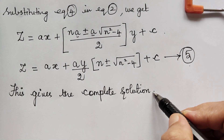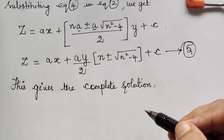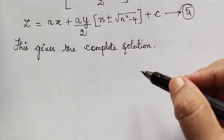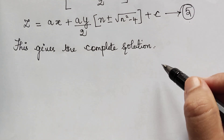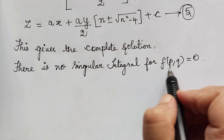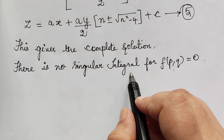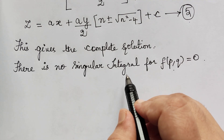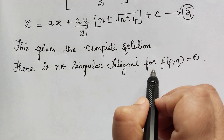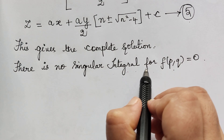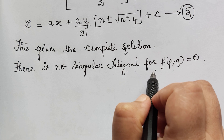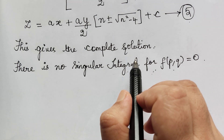After this we have to note that there is no singular integral for f(p, q) = 0, because if we try to find it the result will be absurd. This concept was explained in the previous problem, problem 1, so kindly go through that and then follow this lecture.